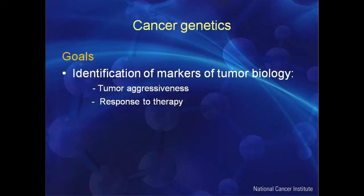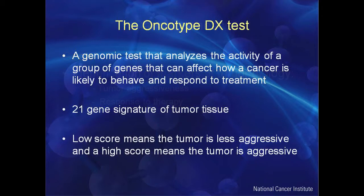Another goal of cancer genetics is to identify markers of tumor biology, aggressiveness, and response to therapy. We don't have a PSA equivalent yet for bladder cancer, but we're working on it. A great example is Oncotype DX — a breast cancer genomic test that analyzes the activity of a group of genes that can affect how a cancer is likely to behave and respond to treatment. This 21-gene signature from breast cancer tumor tissue is already in normal clinical practice.